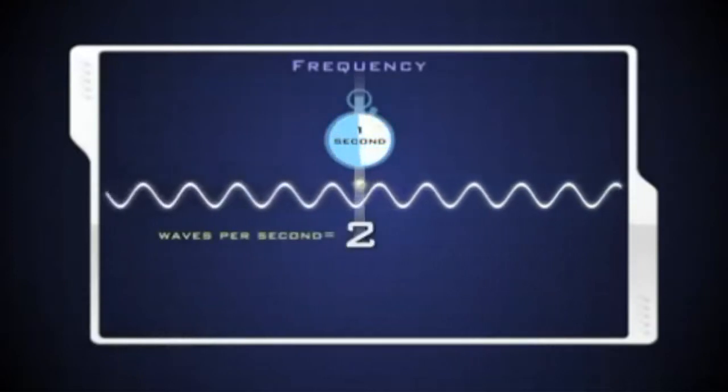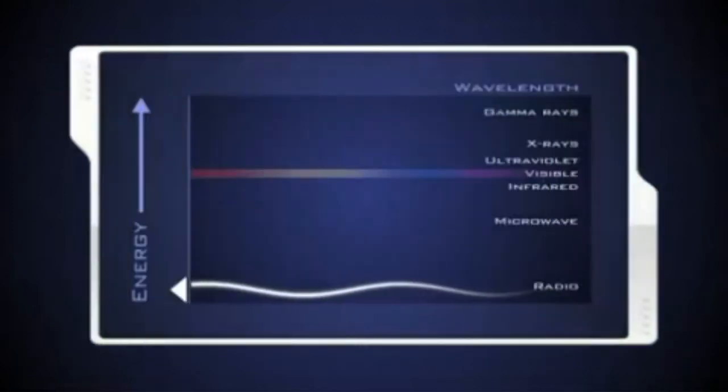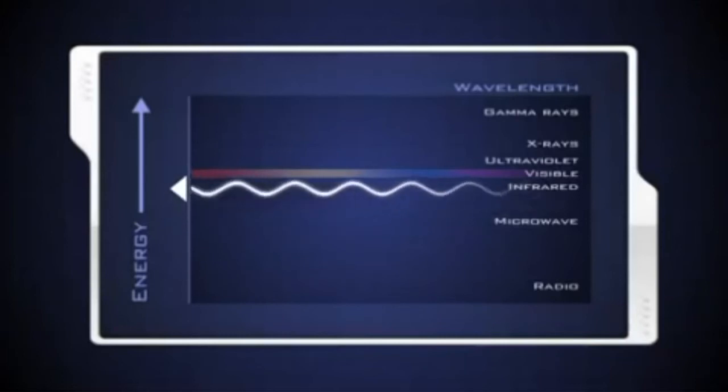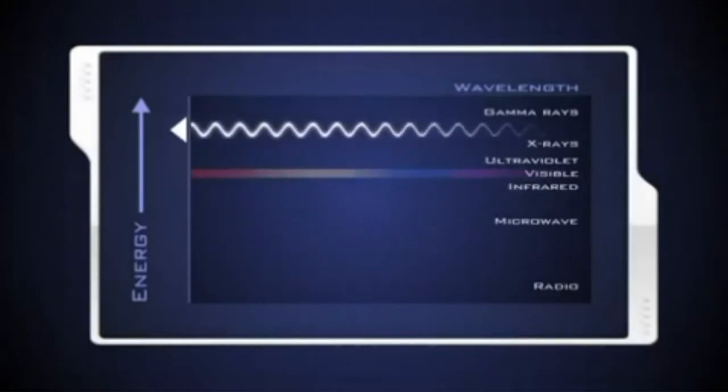One wave or cycle per second is called a Hertz. Long EM waves such as radio waves have the lowest frequency and carry less energy. Adding energy increases the frequency of the wave and makes the wavelength shorter. Gamma rays are the shortest, highest energy waves in the spectrum.